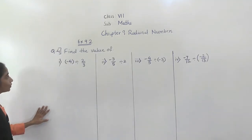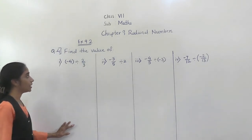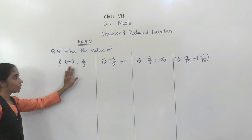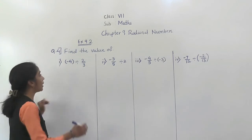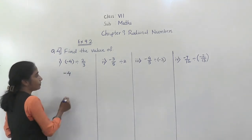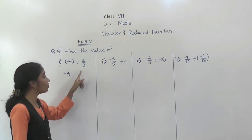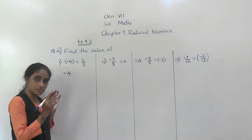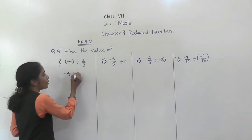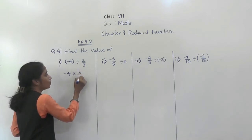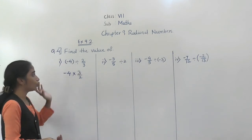Let's solve question number 4: Find the value. Here it has given the division. Minus 4 divided by 2 upon 3. What we are going to do here? We are going to write the reciprocal of 2 upon 3. What is the reciprocal of 2 upon 3? 3 upon 2. We have to do the equivalent multiplication. So 3 upon 2 will come.